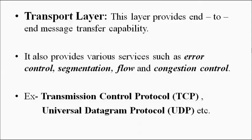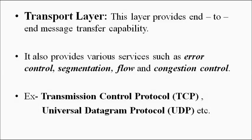The transport layer provides services such as error control — where damaged data received by the destination triggers a request to resend those packets — segmentation, which divides a large data set into smaller packets, and flow and congestion control, which manages the rate at which data is sent and received and prevents overcrowding of data packets. Examples of transport layer protocols are Transmission Control Protocol (TCP) and User Datagram Protocol (UDP).